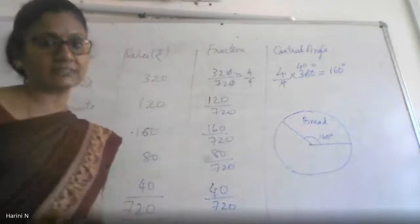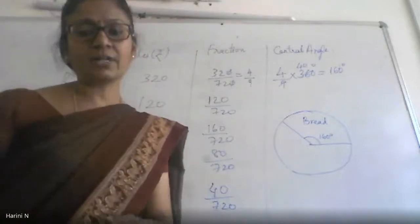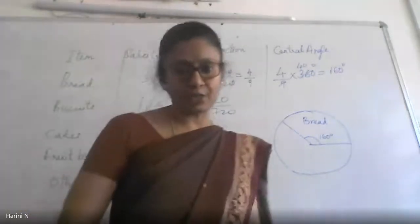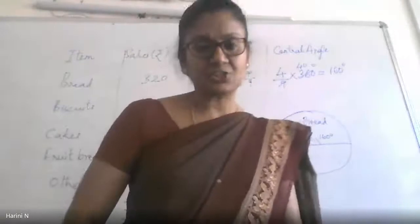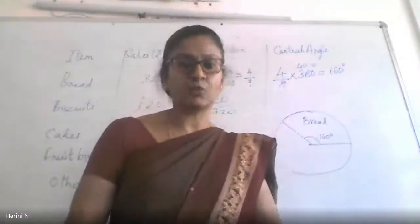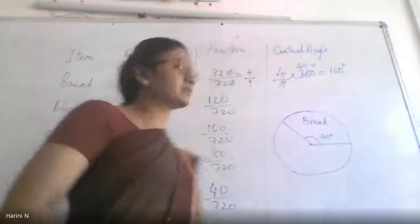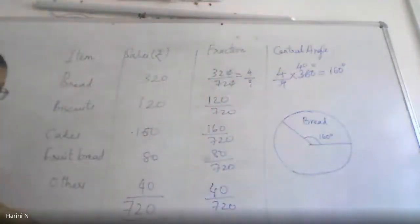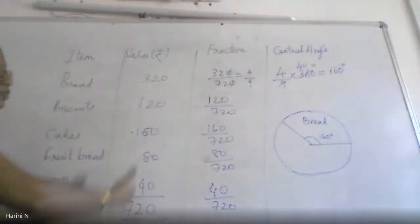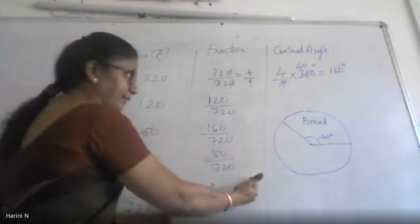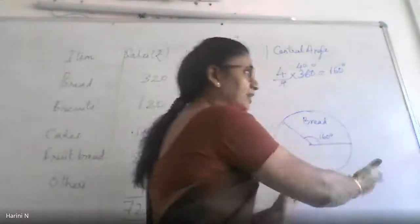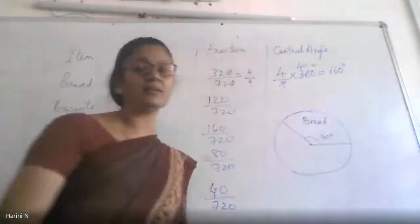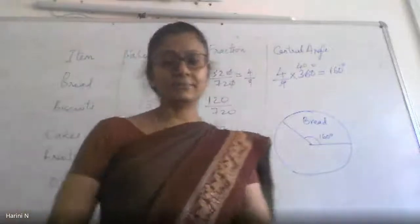This representation of a circle into smaller sectors is called a pie chart — a circular chart. You can expect this for Section D, which is a 4-mark question. The tabulation will be given; you create the fraction column, then the central angle column, then complete the pie chart.